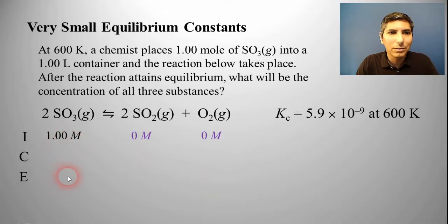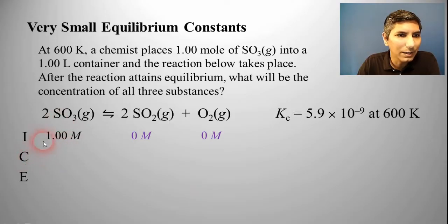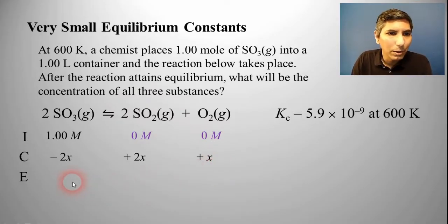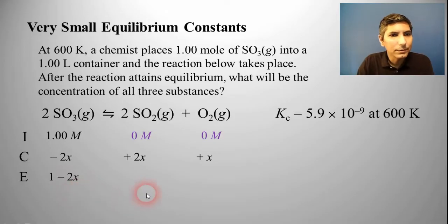Instead of having an equilibrium value to do our math from, we're just going to have to say that the change in sulfur trioxide is minus 2X, because it has to go down. The product side has to go up, and SO₂ is going to be plus 2X since it's a 2 to 2 mole ratio. Oxygen is going to go up as well, but only by 1X since it's a 2 to 1 ratio, so that's plus X. In our equilibrium row we have 1 minus 2X, 2X, and X.